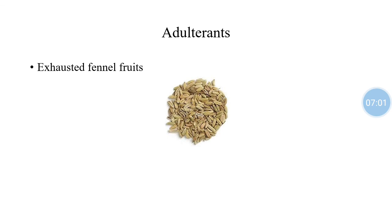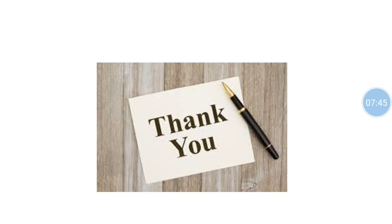Regarding adulterants: fennel is commonly adulterated with exhausted fennel fruits, which can be distinguished by the following characteristics. Fruits from which volatile oil has been removed by treating with alcohol contain very little volatile oil and have a typical odor of fusel oil; such fruits do not contain fenchone. If fruits are exhausted by steam, they appear dark greenish brown in color, contain only traces of volatile oil, and sink in water.